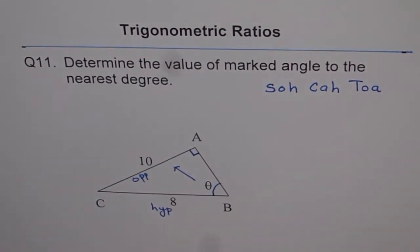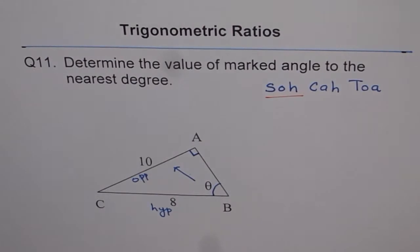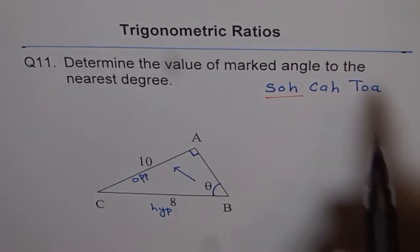So these are the two things given to us. That means we are given opposite and hypotenuse. That means we should use sine, not the others.